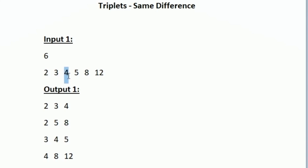Our task is only to print valid triplets. Taking 4 as the starting integer, we can form the triplet 4 8 12, which is valid because the difference between 4 and 8 is 4, and the difference between 8 and 12 is also 4 — satisfying the condition. If we cannot find even a single valid triplet, we print -1 in our output.